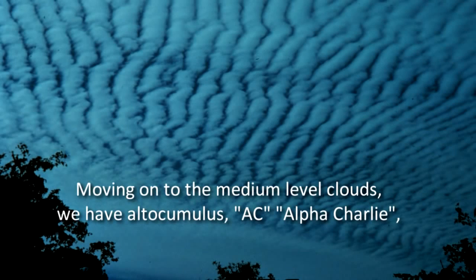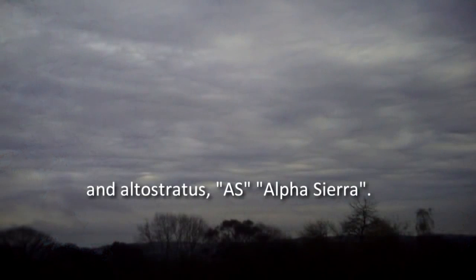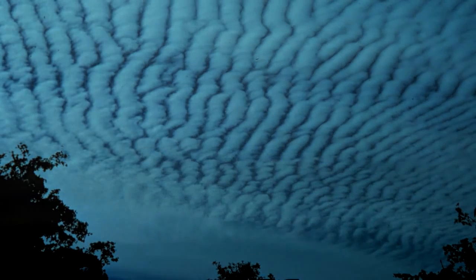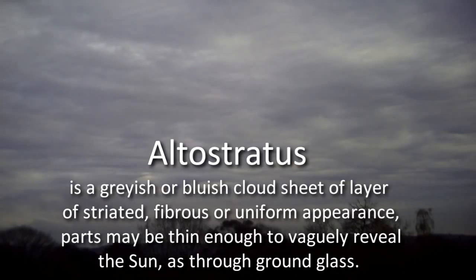Moving on to the medium-level clouds, we have Altocumulus, AC, Alpha Charlie, and Altostratus, AS, Alpha Sierra. Altocumulus are a white or grey patch, sheet or layer with shading, composed of rounded masses or rolls. Normally, these elements are regularly arranged. Altostratus is a greyish or bluish cloud sheet or layer of striated, fibrous or uniform appearance. Parts may be thin enough to vaguely reveal the sun as though through ground glass.